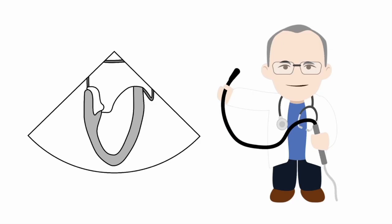In this lesson we're going to learn specifically how to assess the left atrial appendage on transesophageal echo. We're going to begin with the mid-esophageal two-chamber view with the left atrium, the mitral valve and left ventricle, and you can just see the left atrial appendage at the edge of the screen here.